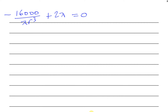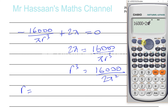Rearranging to find R: 2π = 16,000/(πR³), so cross-multiplying gives R³ = 16,000 / (2π²). Computing: 16,000 divided by 2π² gives approximately 810.569.